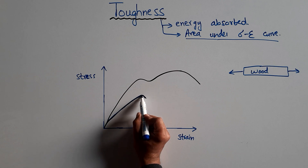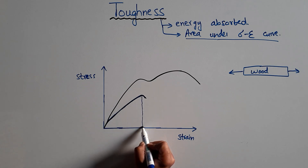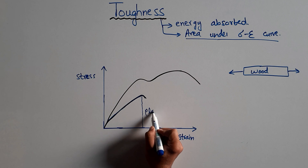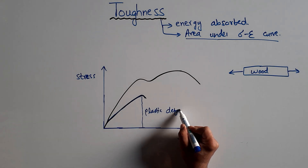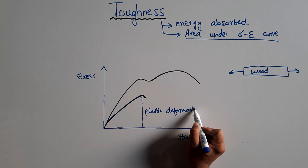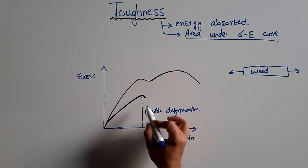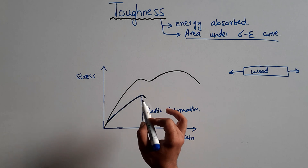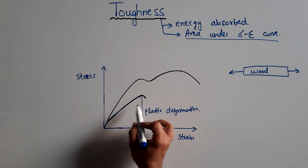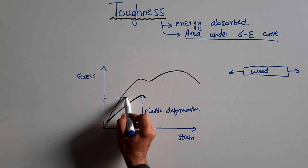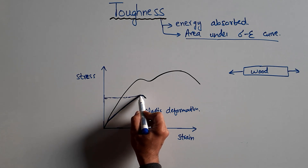We can see that there is very little plastic deformation in the wood material. After reaching its maximum stress, it doesn't deform plastically. So very less energy is absorbed by this material, and also a very small amount of strain is reached.